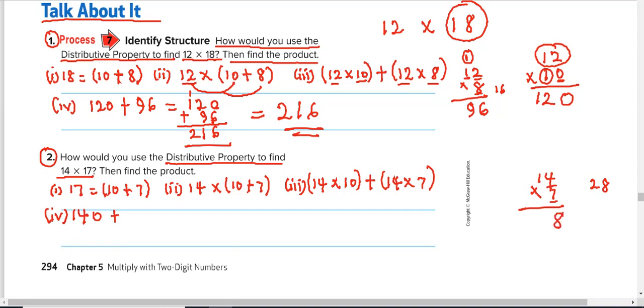And take 2 up. 7 times 1 is 7. 7 plus 2 is 9. So that is 98. We can find 140 plus 98. The ones place digit 8 plus 0 is 8. The tens place digit 9 plus 4 is 13. We write 3 and take 1 up. 1 plus 1 is 2. Final answer, 238.